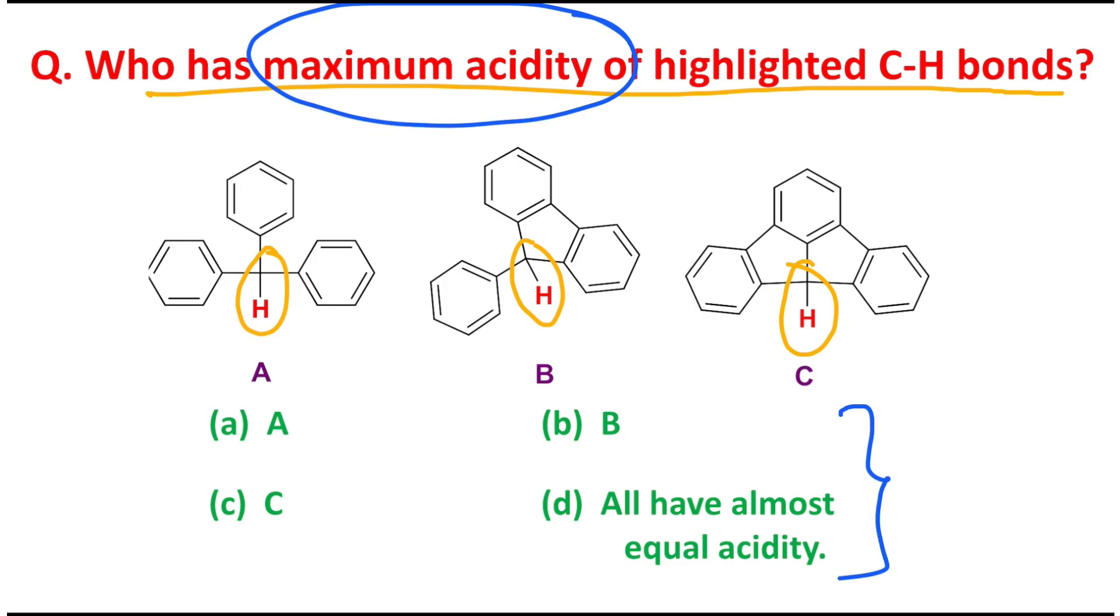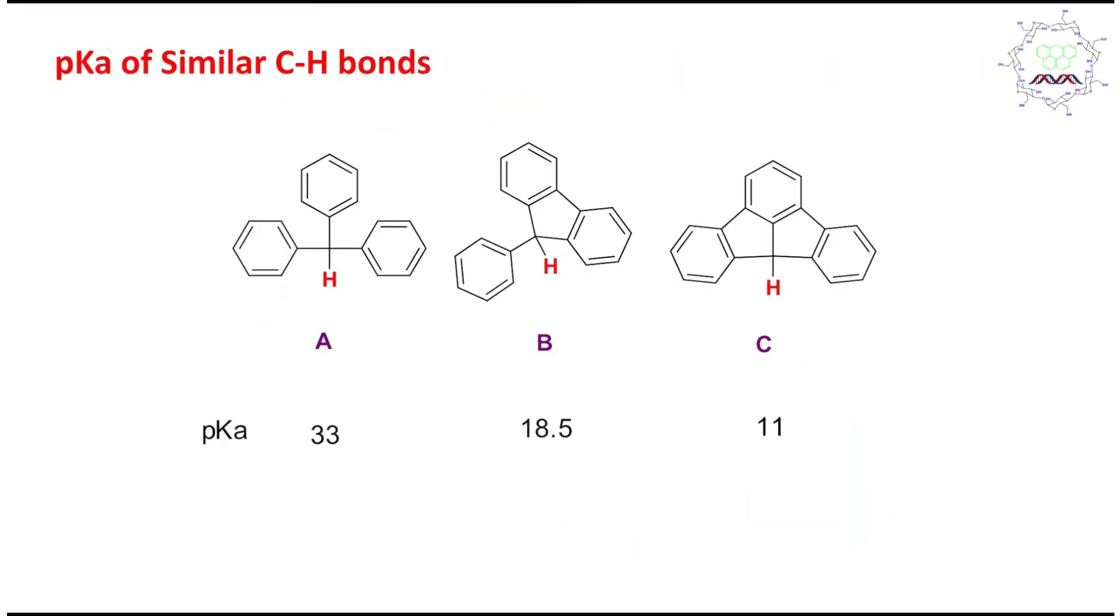I believe you have tried by yourself. It's my turn to give you the right answer. In this case, I will follow a little different pathway. First, I shall give you the answer. Who has maximum acidity? Answer is option C has maximum acidity and how is it proved? Because the pKa values of these similar C-H bonds - if you look at this structure A has pKa 33, this B has pKa 18.5 and C has pKa 11.